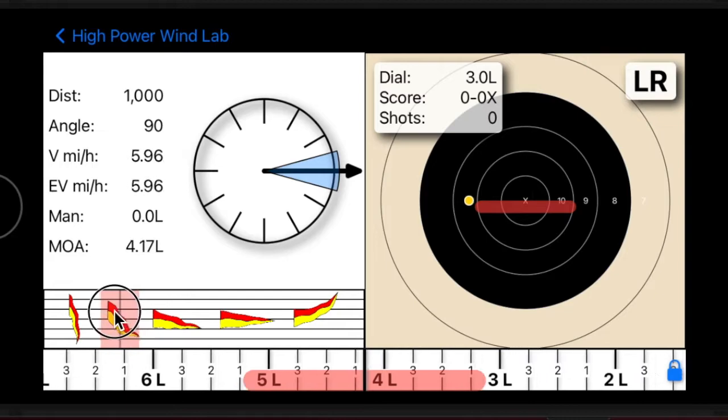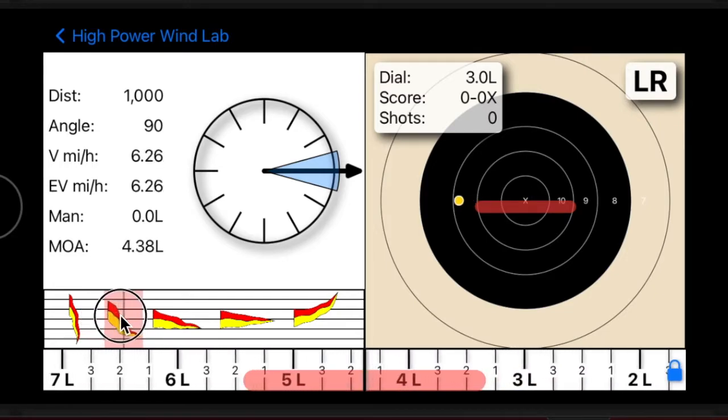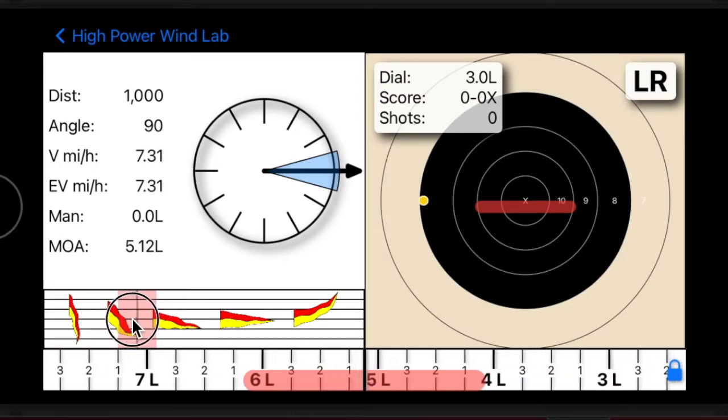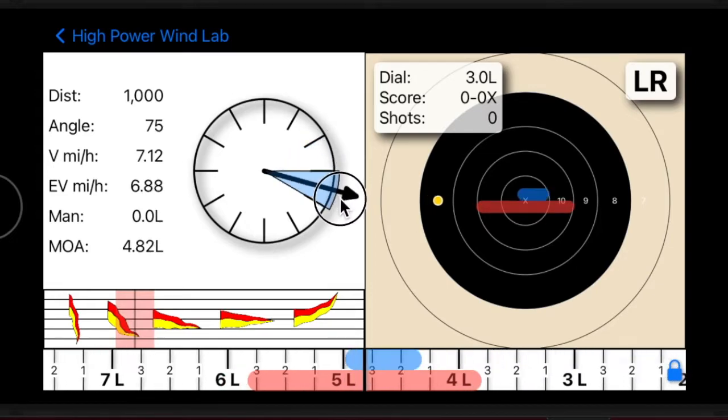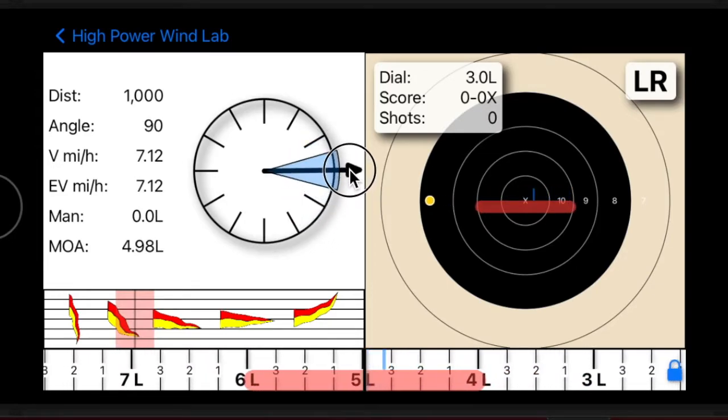You can see the amount of additional dialed correction needed in the upper left corner of the target next to the dial label. In this case, it is telling the shooter to dial 3 minutes on the scope and hold the aim point.